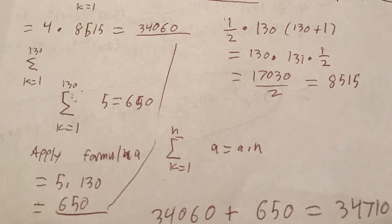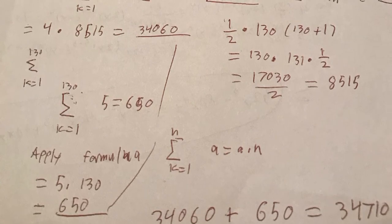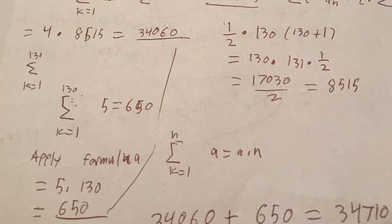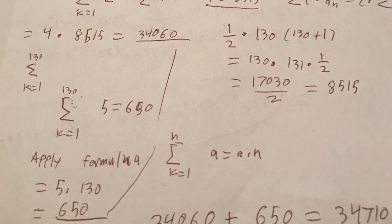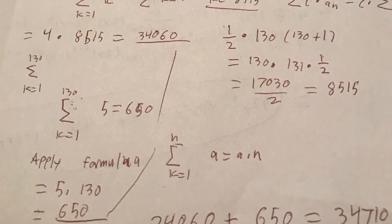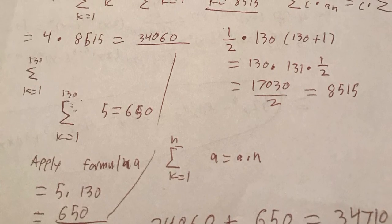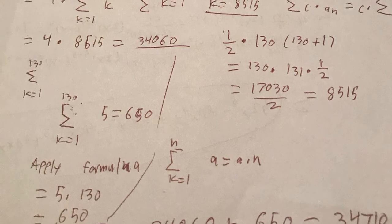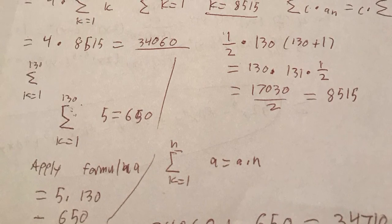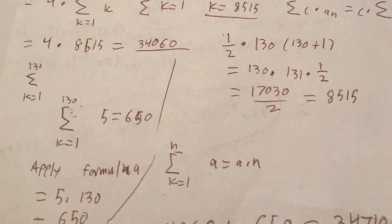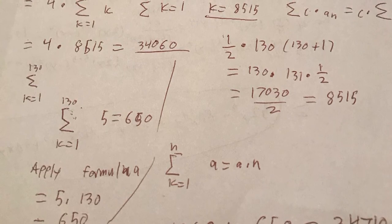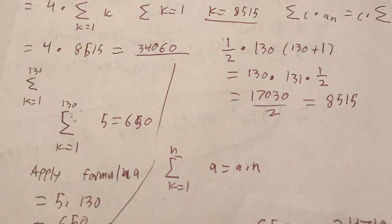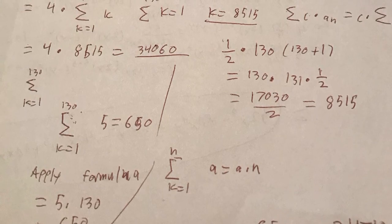And then we will have, with our rule, take out 1 half times 130 and have 130 plus 1 in parentheses. And then we will have that equal 130 times 131 times 1 half. And then we will have that equal to a total of 17,030 over 2 which is equal to 8,515.